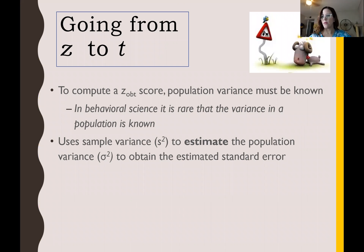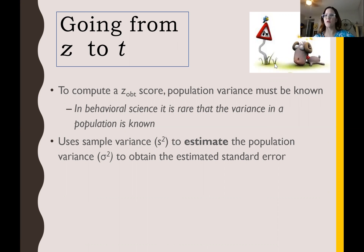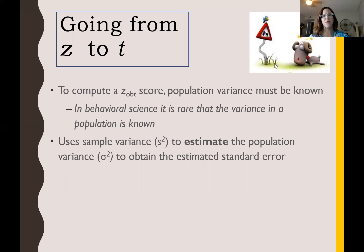When we go from the Z test to a T test, there are some foundational reasons. With a Z test, to get that Z obtained test statistic, we have population information — a population variance or standard deviation plus a population mean. Traditionally in social behavioral science, it's actually rare that we know the variance of a population. We might have an average or mean, but we often don't have all the population information to have that variance. So we use a T statistic when we do not have that population variance.